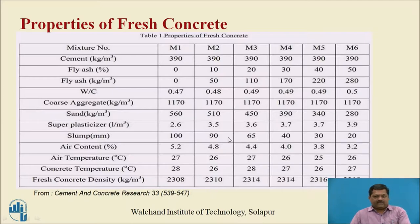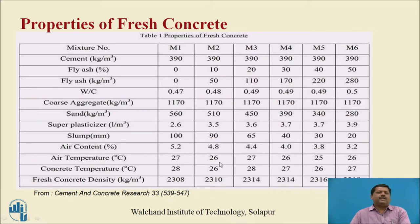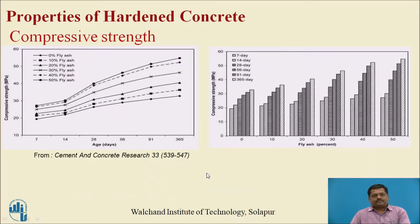Air content in OPC concrete (M1) is 5.2 percent, and as fly ash percentage increases, air content reduces, meaning voids are reduced in concrete with higher fly ash content. Temperature of fresh concrete shows no significant variation across mixes M1 to M6. For fresh concrete density in kg per cubic meter, the value for cement-only concrete is 2308, and density increases slightly as the fly ash percentage increases, because fly ash is a very fine powder that reduces voids.